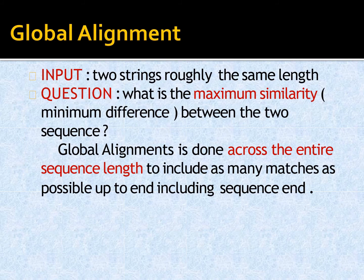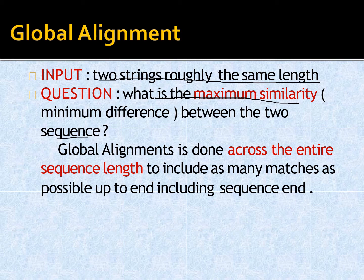If two strings are roughly the same length, what is the maximum similarity or minimum difference between the two sequences? This leads us to global alignment. Global alignment is done across the entire sequence length to include as many matches as possible, up to and including the sequence ends.